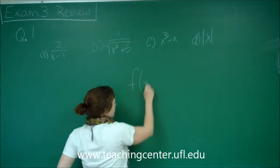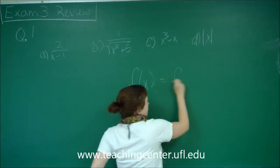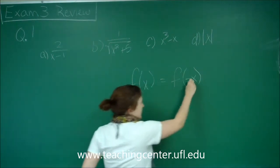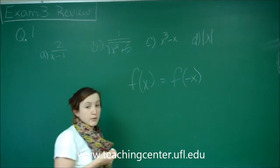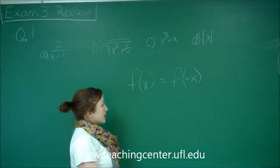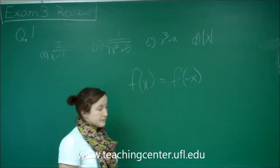for an even function, what it's saying is that we can place in a negative x for all x values where we have in our f of x equation, and the answer will come out to be exactly the same thing.